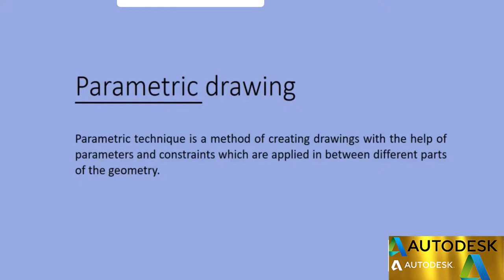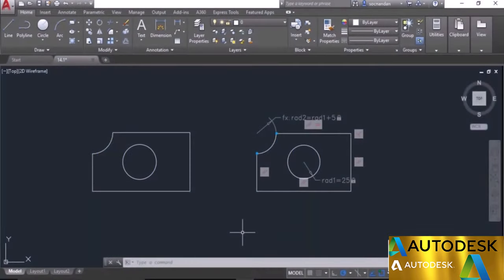We'll now start looking into the parametric technique of making drawings. Parametric technique is not new and is used in many software, but in AutoCAD it was introduced around the year 2010. The parametric technique is a simple method in which drawings are made with the help of constraints or restrictions. These restrictions are applied on different mating parts. To explain this concept, I'll use a sample drawing. Here we have two similar geometries. In the first case no constraint has been applied, but in the second case there are some constraints applied between different parts of the geometries.